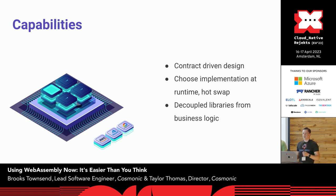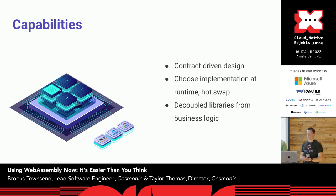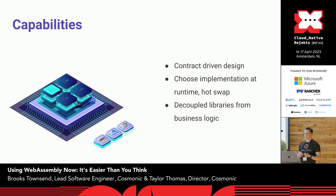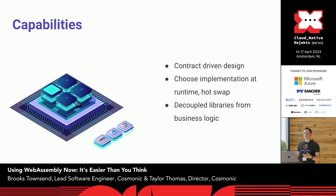Capabilities are the other side of the contract — the implementation for things like HTTP server or message broker. For message broker you might use NATS or Kafka. Because you choose the implementation at runtime, you can hot-swap — want Kafka one day and NATS the next, just change it, nothing in your application needs to recompile or redeploy. Decoupling libraries from business logic is powerful for vulnerabilities — open source libraries are managed at the platform layer, not by every application.